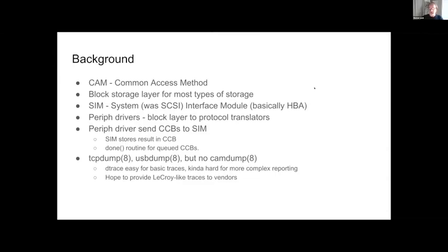FreeBSD has had TCPdump from its very first versions to let you monitor network traffic, which is very helpful for diagnosing problems. Later, after the USB stack was rewritten by Hans Peta, we had something called USBdump that does basically the same thing. It hooks into the BPF system and treats USB transactions as if they were network traffic, so you can dump and filter them. But we haven't had any way to do that with CAM results — until now.